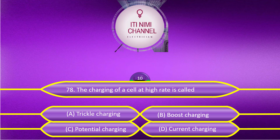The charging of a cell at a high rate is called: Option A, Trickle charging; Option B, Boost charging; Option C, Potential charging; Option D, Current charging. The answer is Option B, Boost charging.